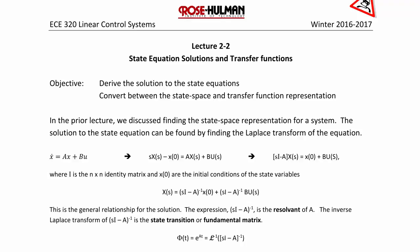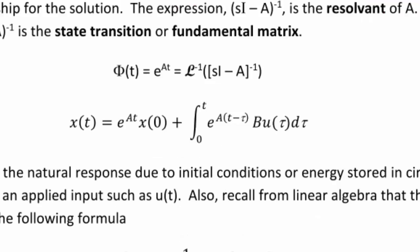The expression (sI - A)⁻¹ is called the resolvent of A. The inverse Laplace transform of (sI - A)⁻¹ is the state transition or fundamental matrix: φ(t) = e^(At). Therefore x(t) = e^(At)·x(0) + ∫₀ᵗ e^(A(t-τ))·B·u(τ)dτ. Note that this is the sum of the natural response due to initial conditions or energy stored in electric circuit elements, and the forced response due to an applied input such as u(t).